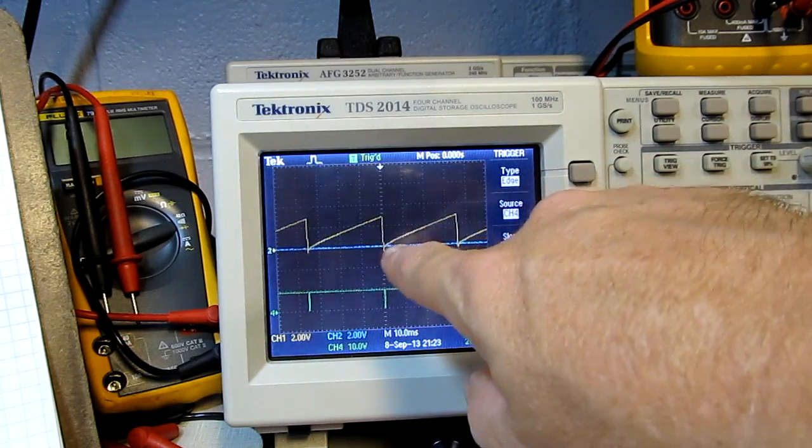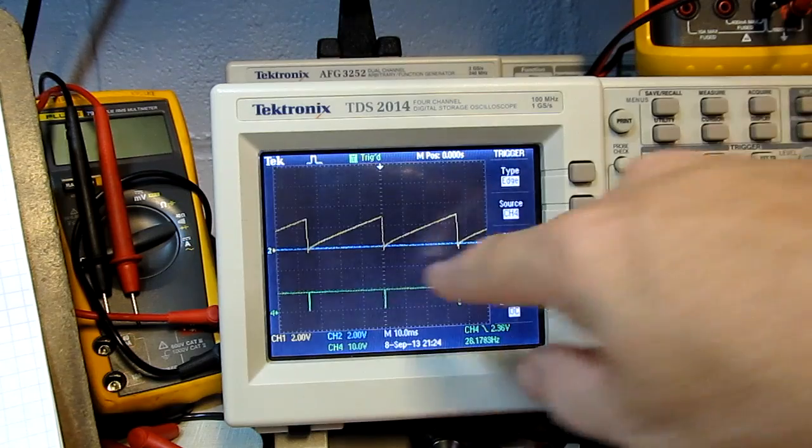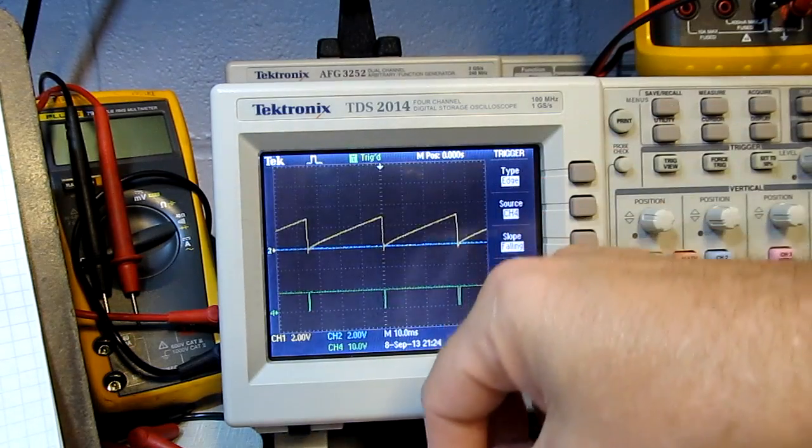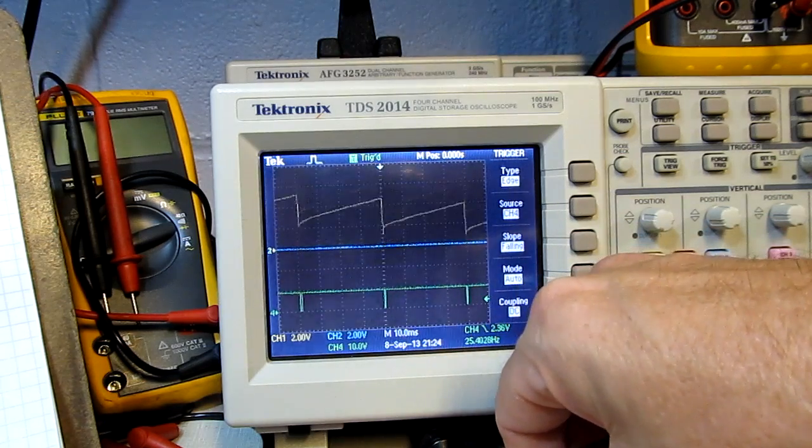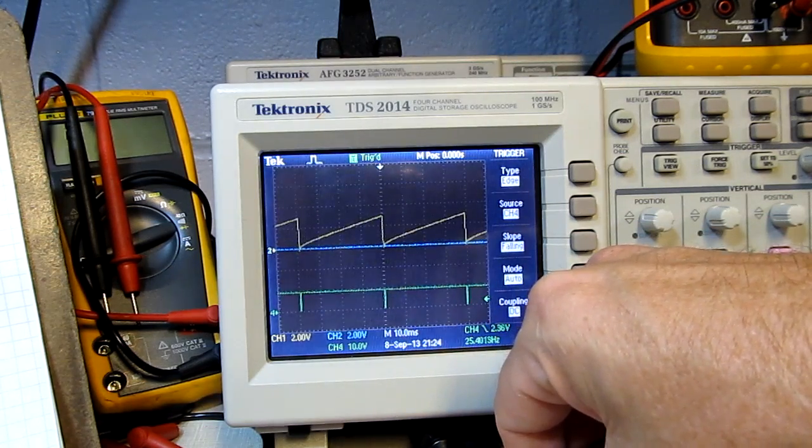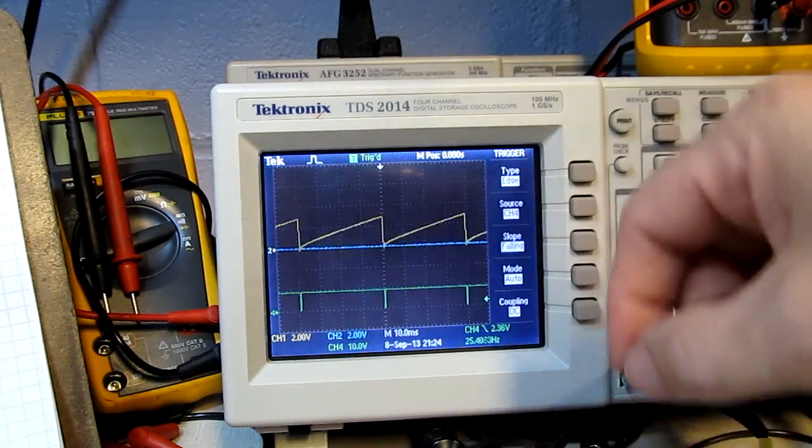So you can always kind of get a nice stable waveform here regardless of what you're doing with the ramp and offsets and everything else. So the blue trace right now is just showing about where ground is.